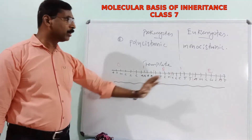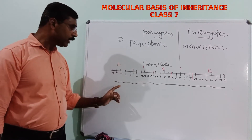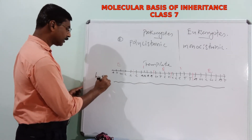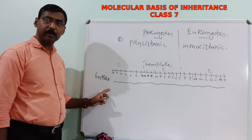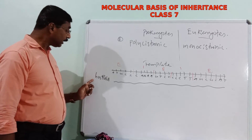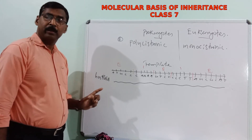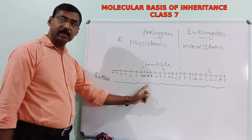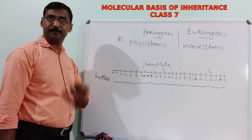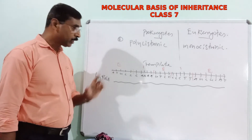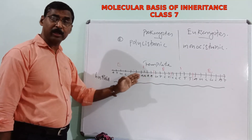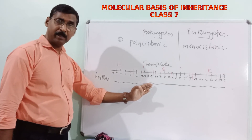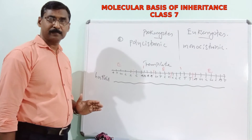Actually, this initial transcript in eukaryotes is not called mRNA — it is called HnRNA, or heterogeneous nuclear RNA. It is called heterogeneous rather than homogeneous because the unwanted intron base sequences are also present in this HnRNA alongside the exon sequences.